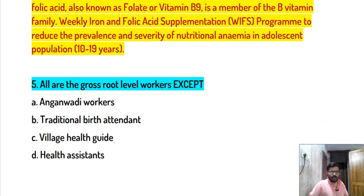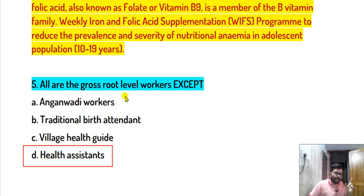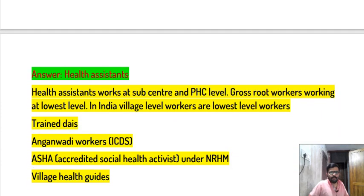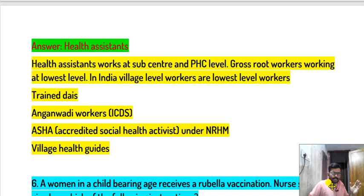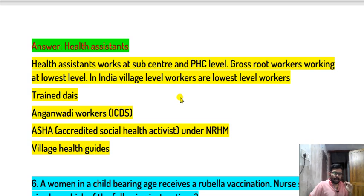Grassroots-level workers include ASHA workers, traditional birth attendants, and village health guides. Health assistants work at the sub-center and PHC level, so they are not the lowest-level workers. In India, the lowest-level village workers include ASHA (under NRHM), anganwadi workers (under ICDS), and village health guides.